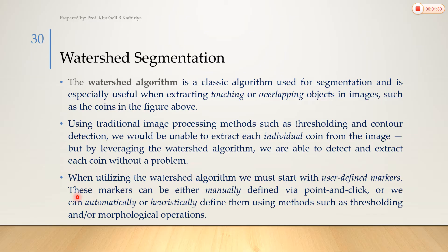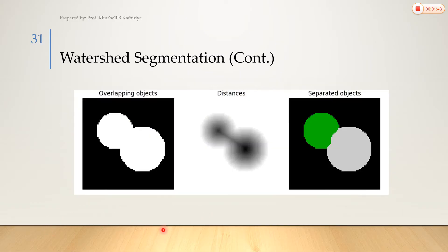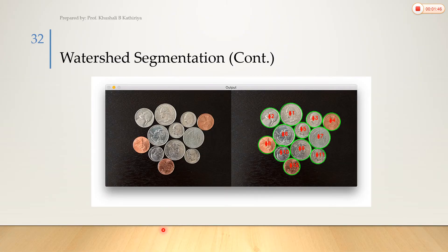When utilizing the watershed algorithm, we must start with user-defined markers. These markers can be either manually defined via point and click, or we can automatically or heuristically define them using methods such as thresholding and morphological operations. Let's talk about the simple watershed algorithm theory concept.